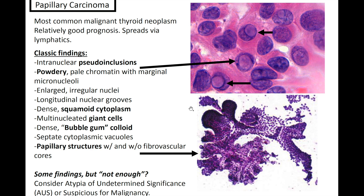Papillary thyroid carcinoma is certainly an entity to be familiar with. It's the most common malignant thyroid neoplasm, with a relatively good prognosis, and it spreads via the lymphatics. The classic findings in PTC: you're going to see intranuclear pseudo-inclusions, as we see here. You're also going to see powdery, pale chromatin with marginal micronucleoli, enlarged irregular nuclei, longitudinal nuclear grooves, dense squamoid cytoplasm, multinucleated giant cells, or dense bubblegum colloid.